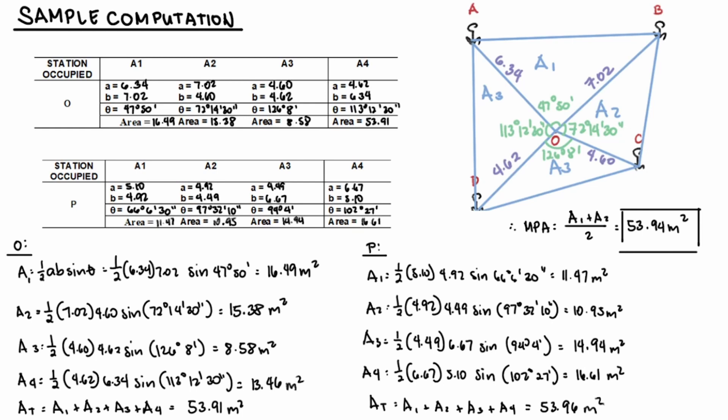Finally, to get the total area of this field, just get the sum of the areas of each triangle. So A1 plus A2 plus A3 plus A4, you'll get 53.91 meters squared.